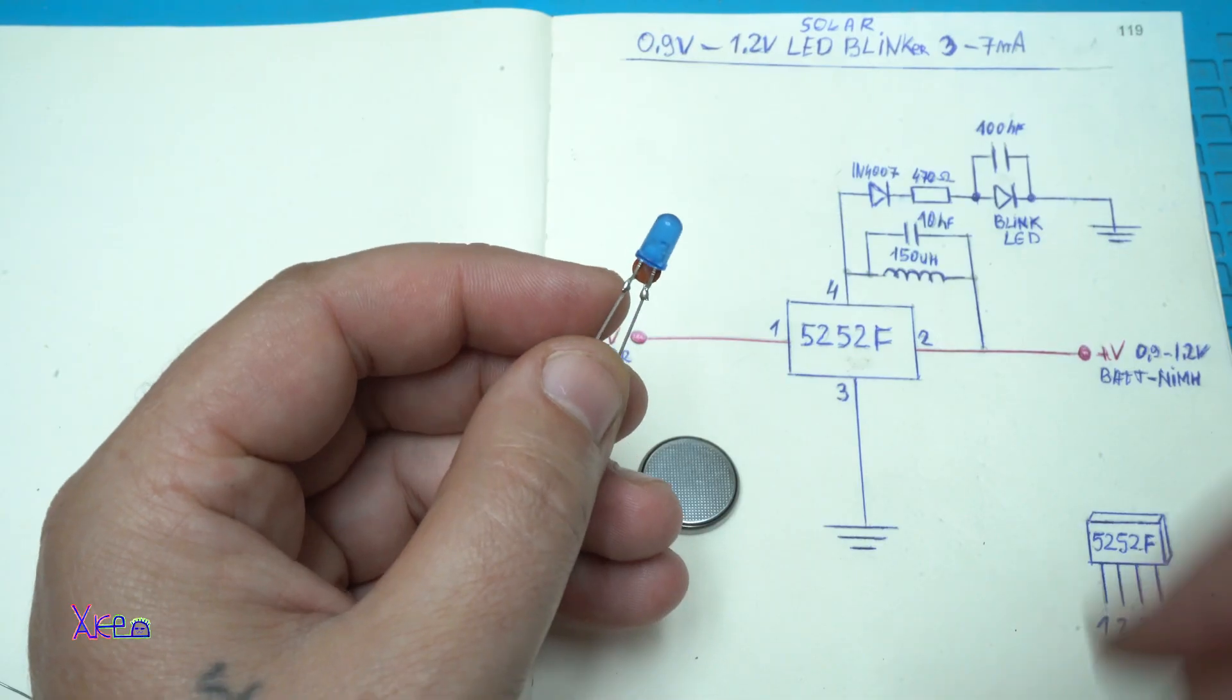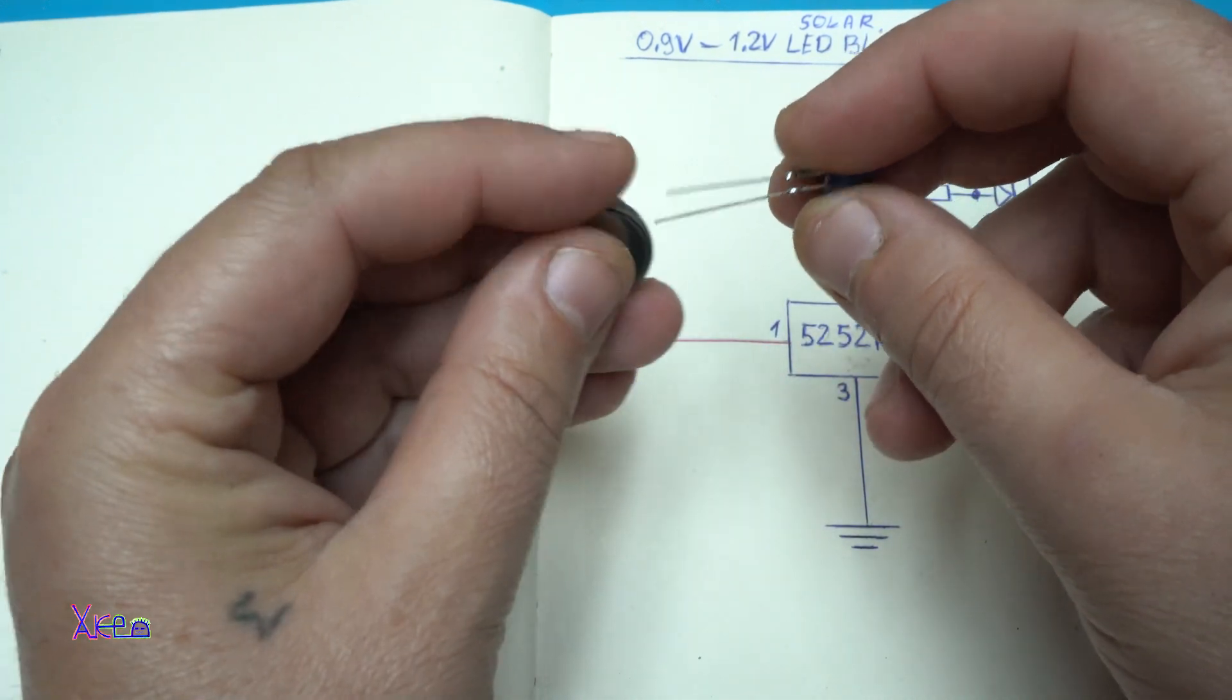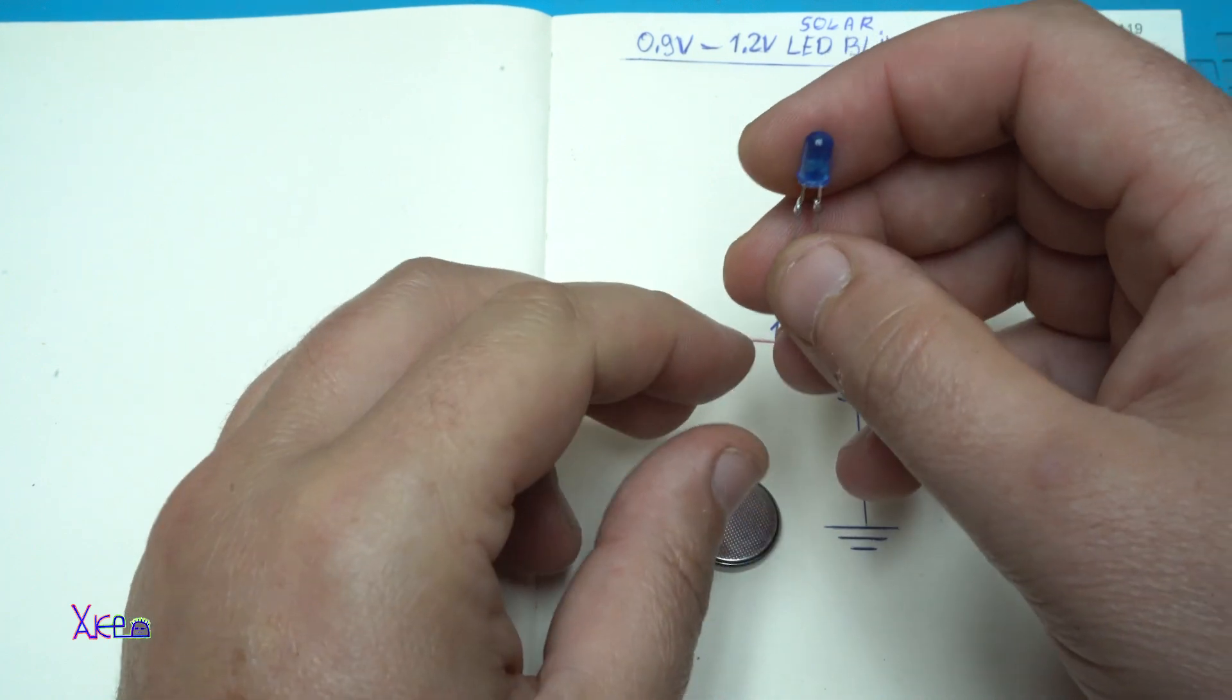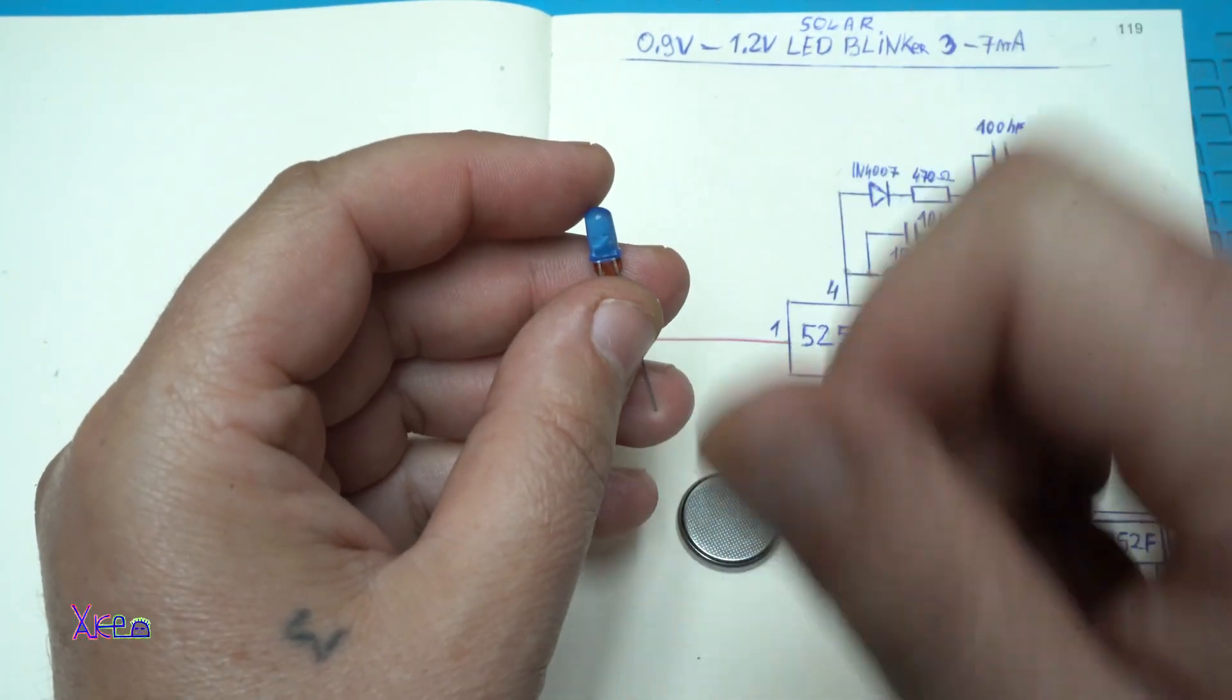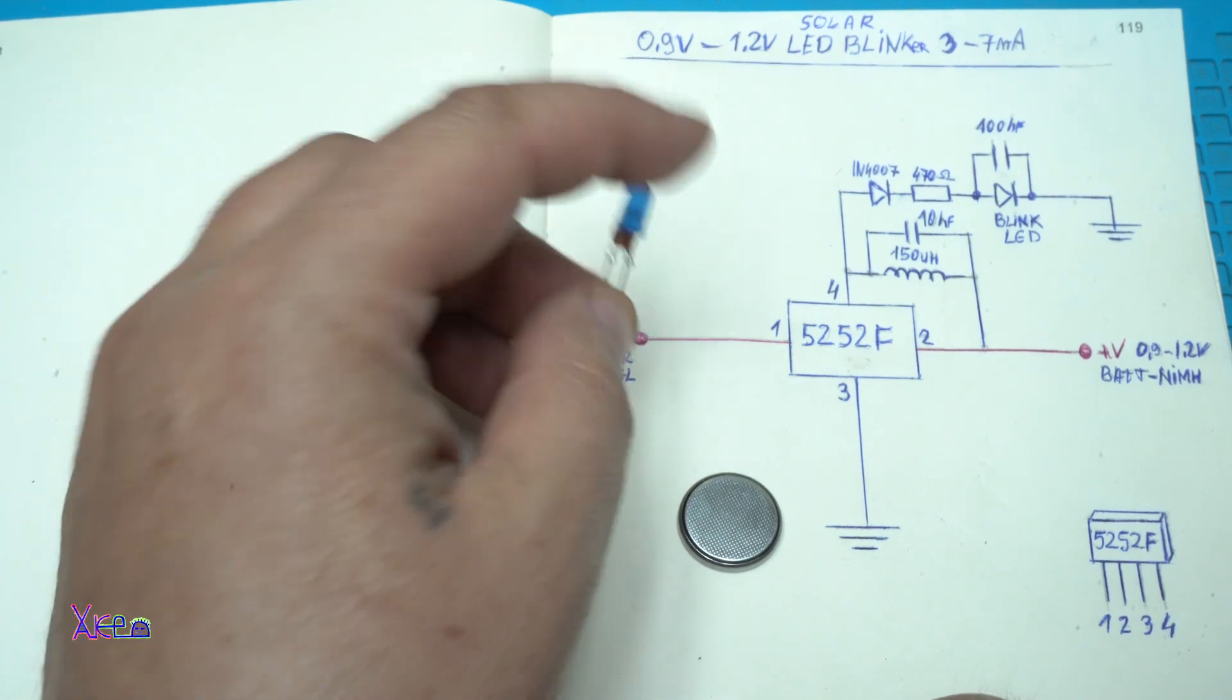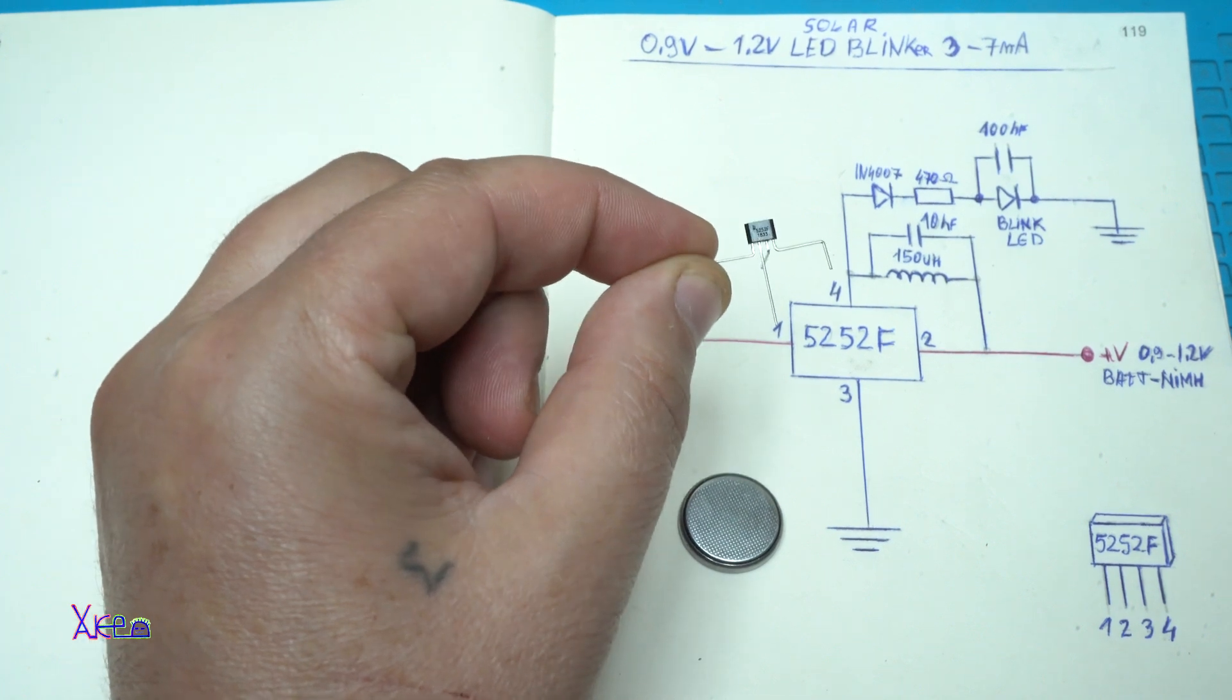This blue LED has a built-in chip so it can blink. It works on 3 volts, but using the step-up integrated chip 5252, it will increase the voltage so the LED works properly.